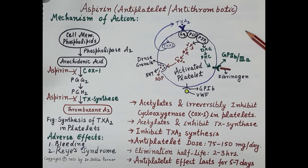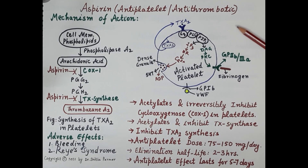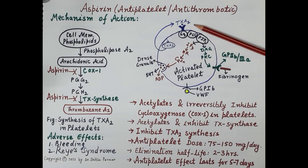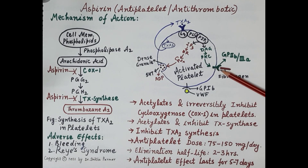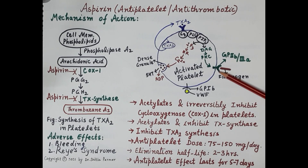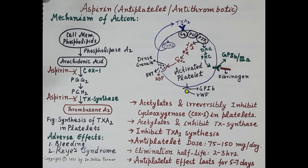This slide clearly explains the antiplatelet mechanism of action of aspirin. Aspirin inhibits the synthesis of thromboxane A2 and further inhibits thromboxane A2-mediated activation of GP2b3a receptors, thereby inhibiting final platelet aggregation. Let us understand the mechanism of action in detail.